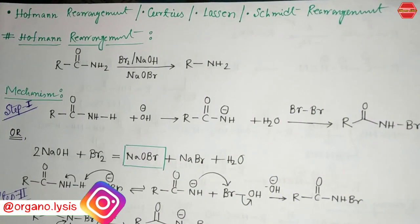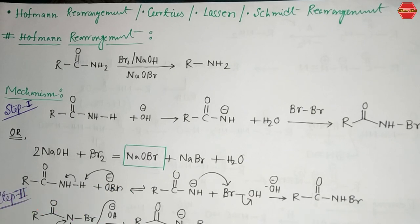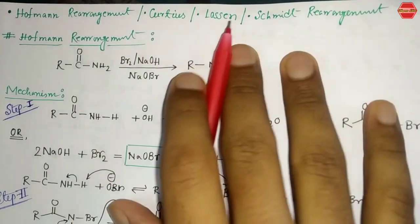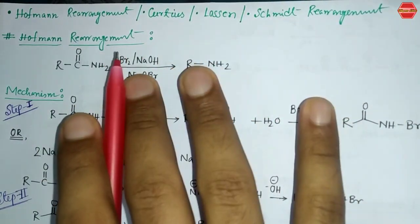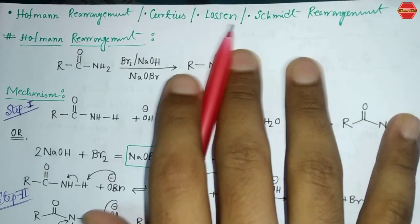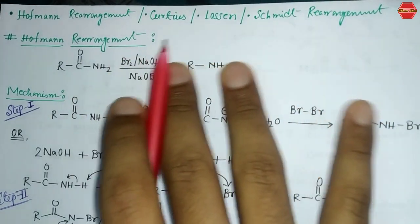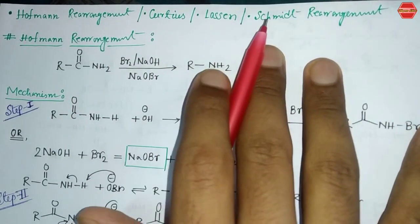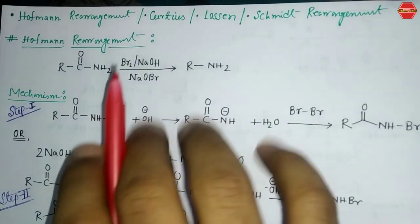Hello everyone, welcome to Organolysis. This is rearrangement reaction Part 5. In this video we are going to learn about four important rearrangement reactions: Hofmann, Curtius, Lossen, and Schmidt rearrangement reactions. These four are interrelated to each other and generally form the same intermediate, which is why they are covered together.